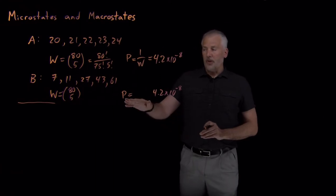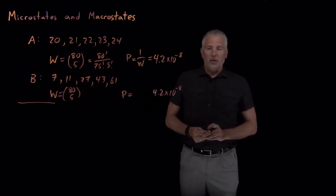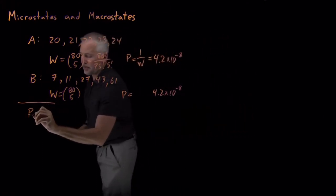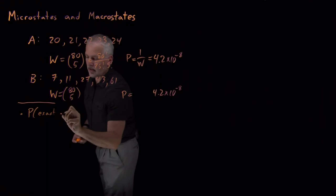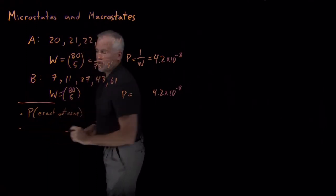So what we've calculated the probability of is drawing these exact five numbers. When what your friend was more interested in is maybe what is the, perhaps, so what we calculated was the probability of some exact outcome.